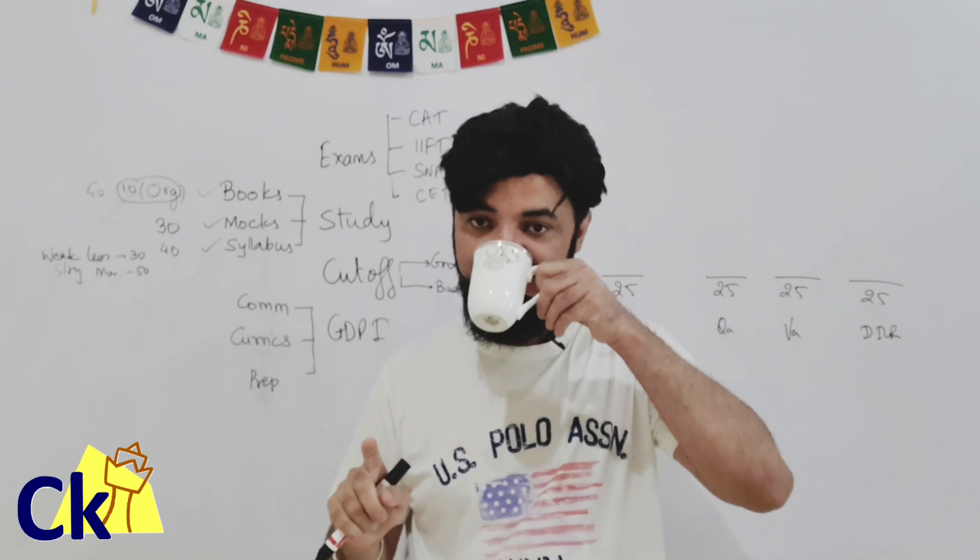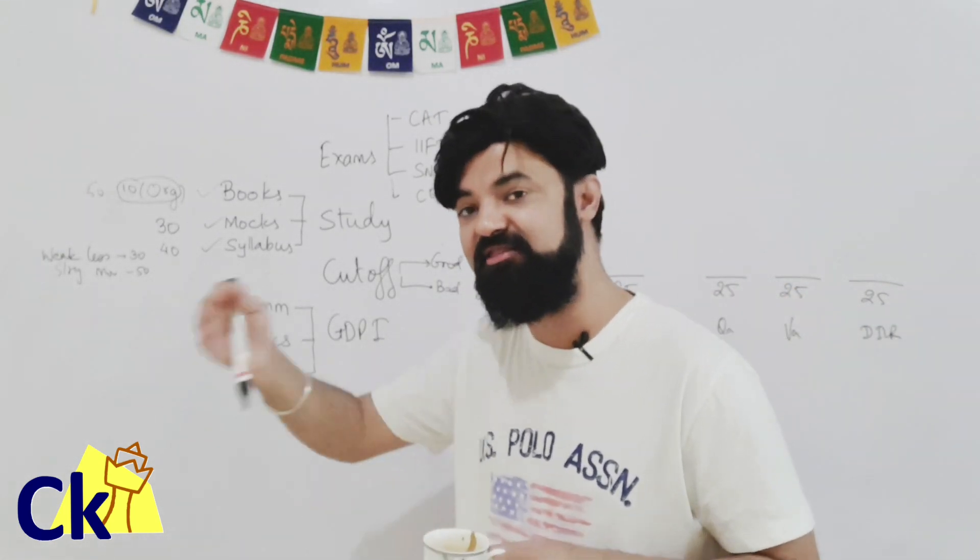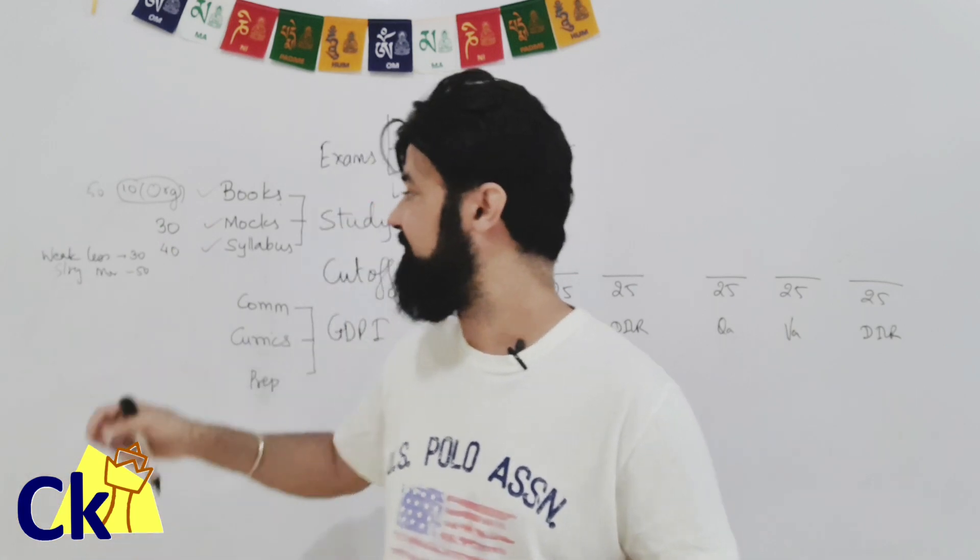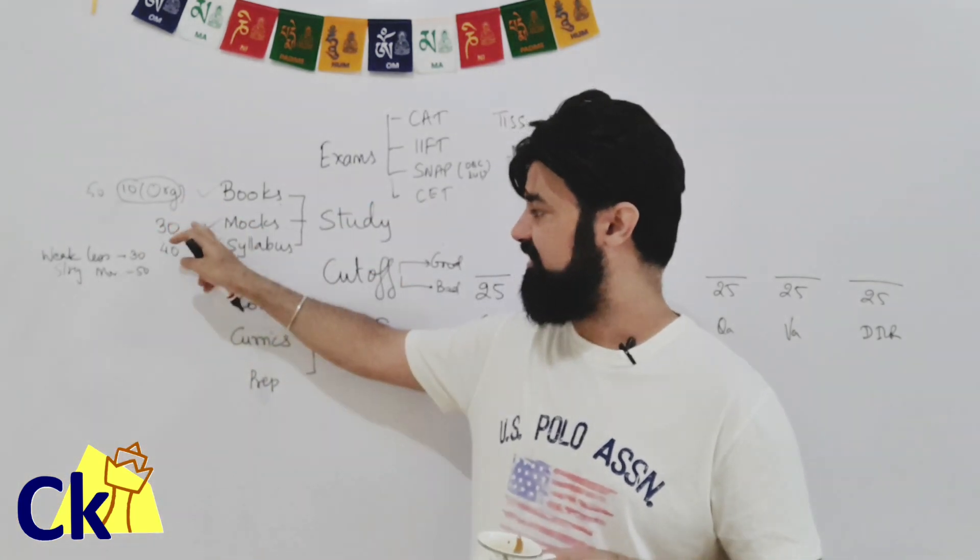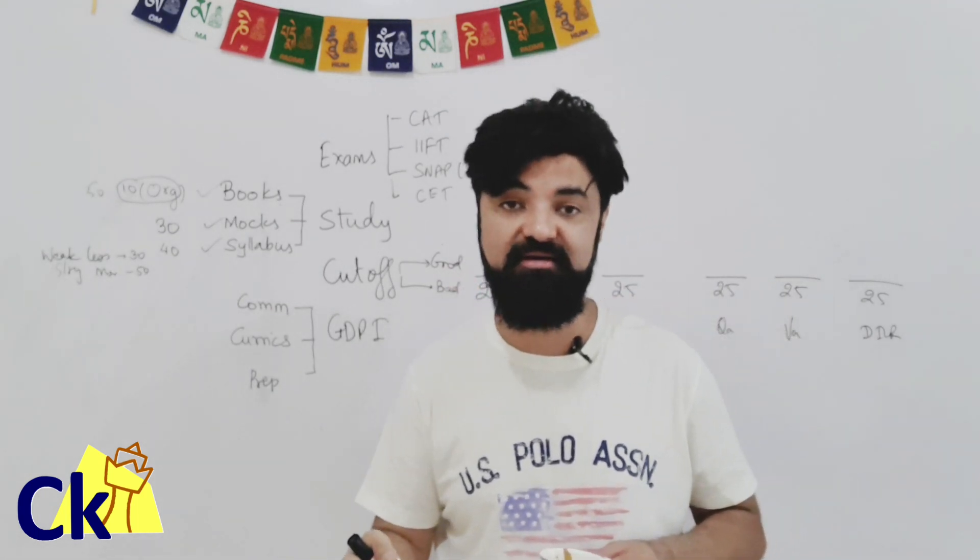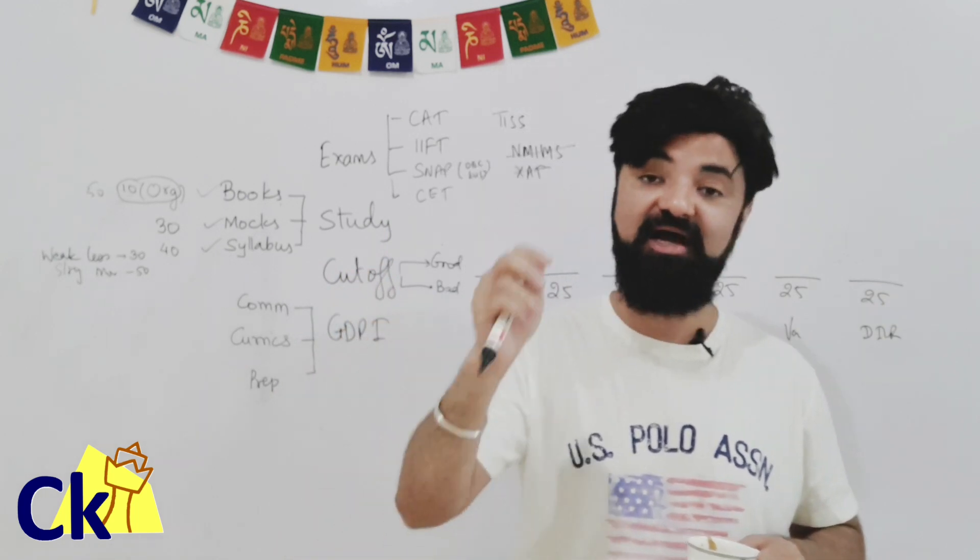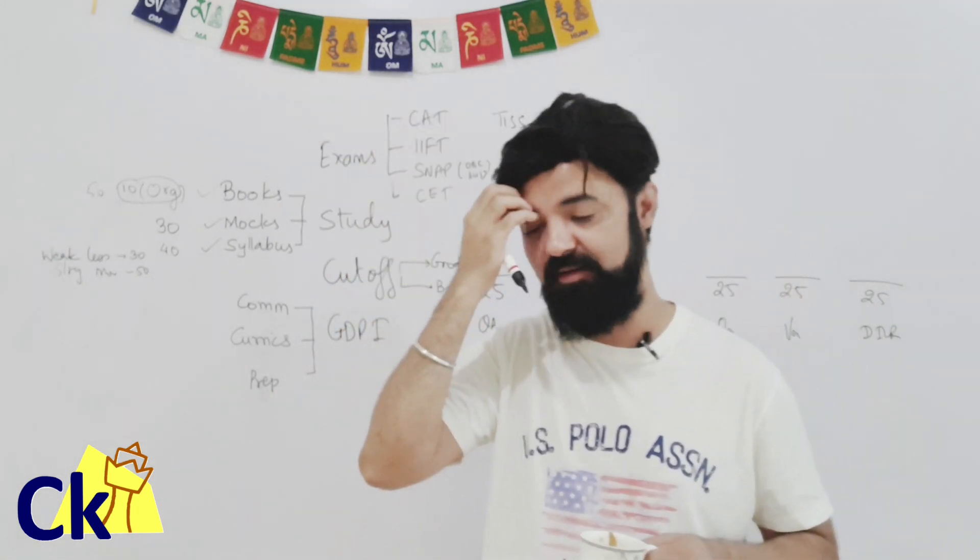You can't become expert even after doing 500 questions because 501st question will be something new. So 10 books, 30 mocks, and 40 chapters. This is your syllabus. We have to complete this. We have time. Why skip it? Skip when? In the last one month, I'll tell you what to skip. Right now we have to do everything. So in case you want to join our program, link is given in the description box about mocks, books, you can join our program there for CAT, for SNAP, all the other exams.